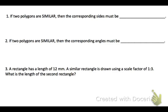Alright, number one. If two polygons are similar, then their corresponding sides must be proportional. Number two, if two polygons are similar, then the corresponding angles must be congruent.